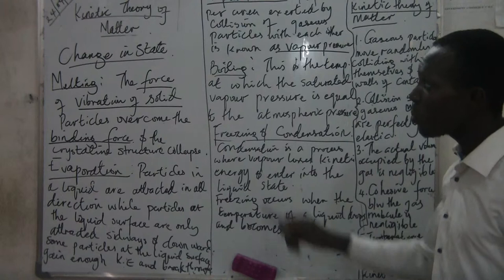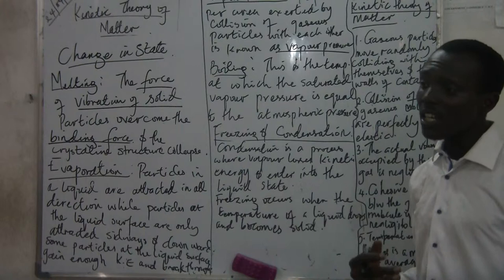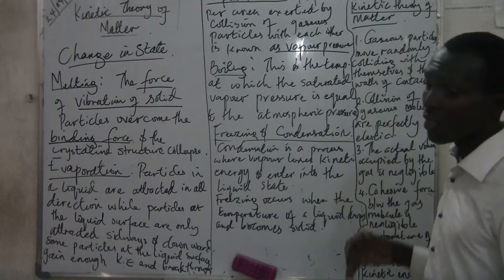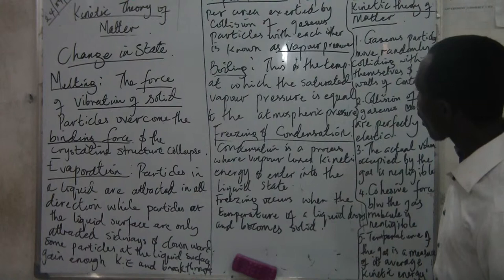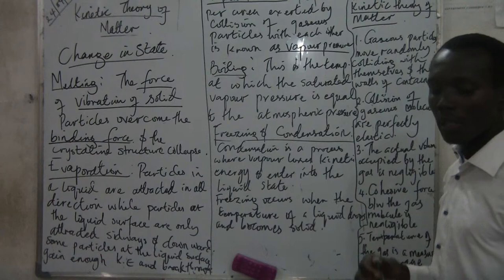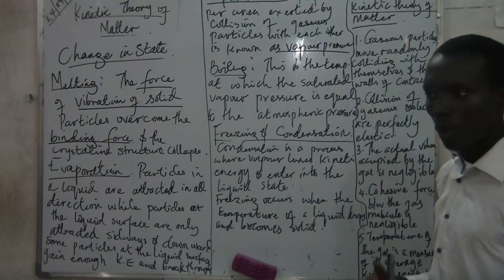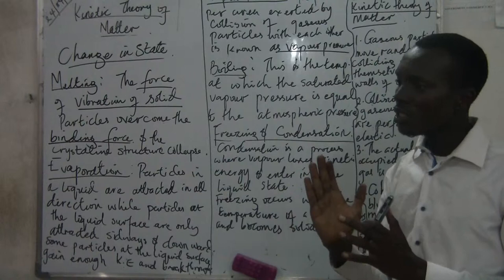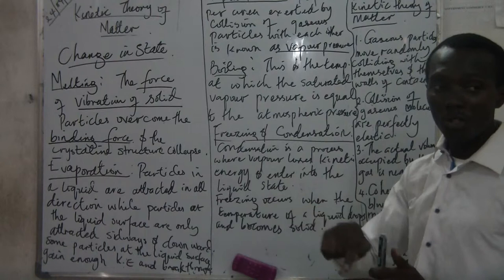The next thing we'll look at is the kinetic theory of matter, which is based on certain assumptions for a kind of gas known as a perfect gas or ideal gas. An ideal gas must meet five criteria. The first is that gaseous particles move randomly, colliding with themselves and with the walls of the container. The particles must be moving in random motion — specifically, they move in a straight line in random motion.